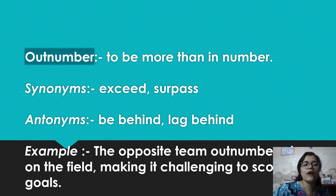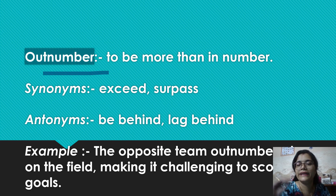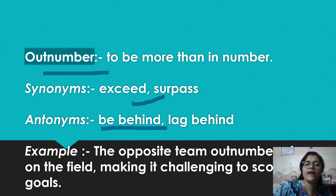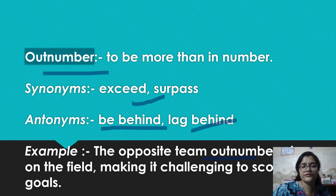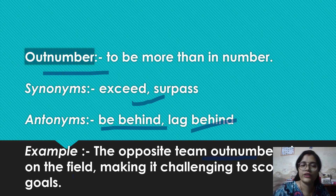Okay, next is outnumber. Guys, outnumber, outshine — these are some of the words which we use when we want to talk about being more than in number. Outnumber means: to be more than in number. Synonyms: exceed or surpass. Antonyms: be behind or lag behind. Example: The opposite team outnumbered on the field, making it challenging to score goals — the opposite team had extra score gained, so it was becoming challenging for the other team.